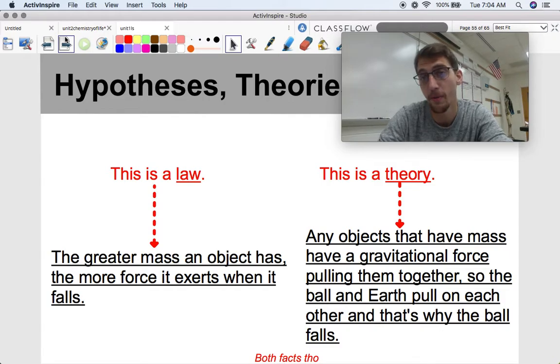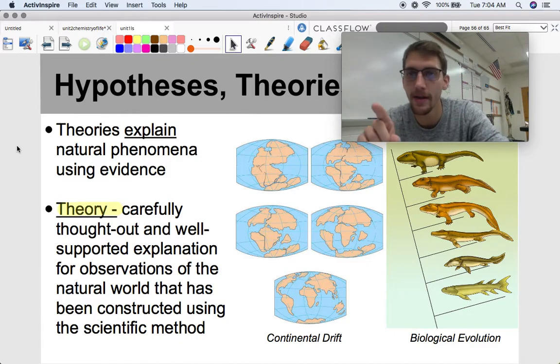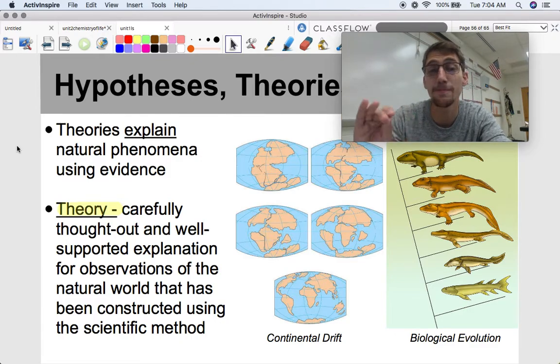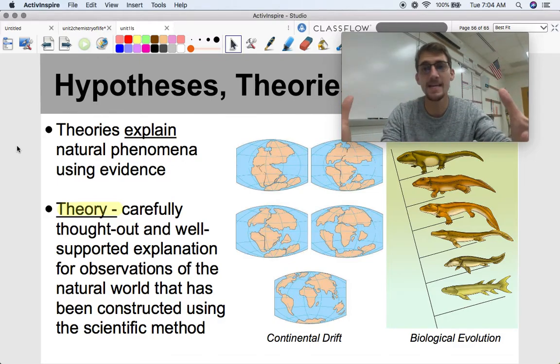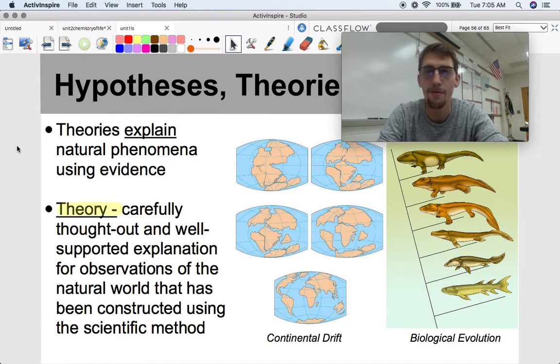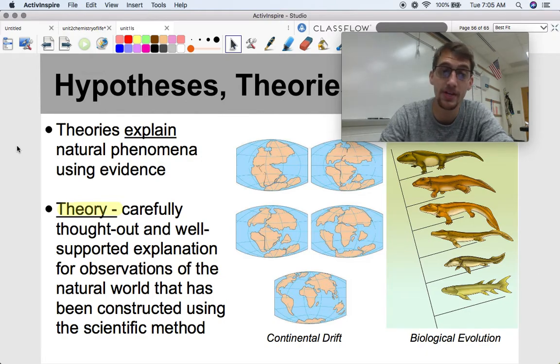Both are indisputable facts. So can a theory be indisputable fact? Absolutely it can. The job of a theory is not to be somebody's guess, or just somebody's idea. Hypothetical, get it? Hypothesis idea. Theories explain natural phenomena using evidence. They piece together all these different forms of evidence and provide one large explanation for why things are the way they are in the natural world. The definition of a theory in science is that it's a carefully thought out and well-supported explanation for observations of the natural world that has been constructed using the scientific method.